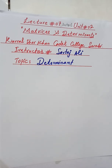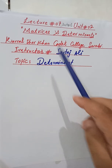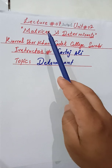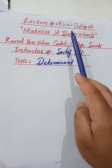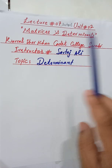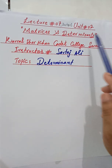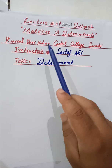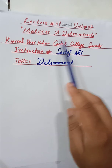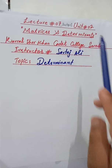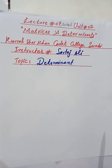Bismillah ar-Rahman ar-Rahim, Assalamu Alaikum. This is lecture number seven, part one, unit number two. The title of unit number two is Matrices and Determinants.